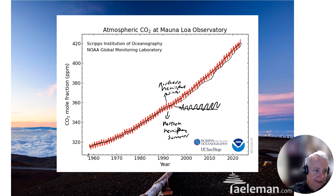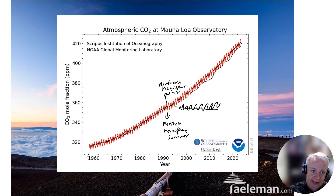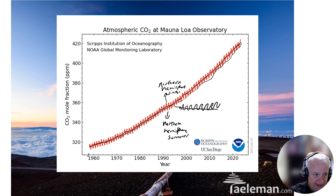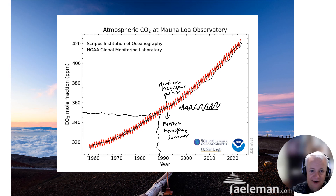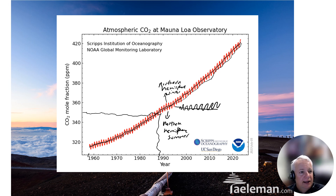Right now, our average CO2 concentration in the atmosphere is about 420 parts per million. Back when I was in graduate school measuring CO2 concentration with some of my photosynthesis instruments, the CO2 concentration in the atmosphere was around 350 — that was in the late 80s, early 90s. That's going up mainly because of fossil fuel emissions.